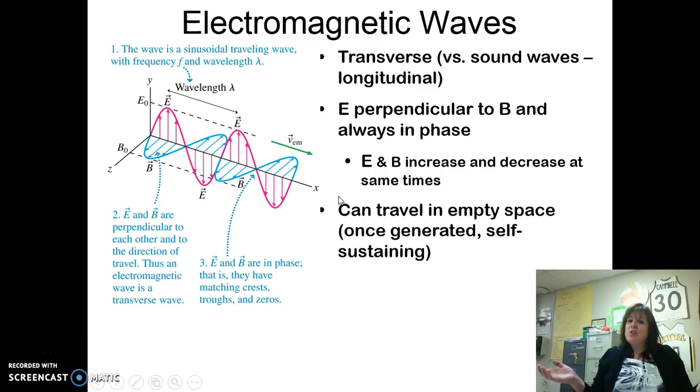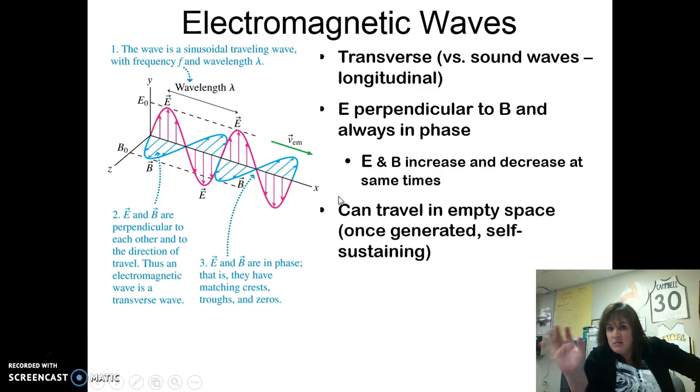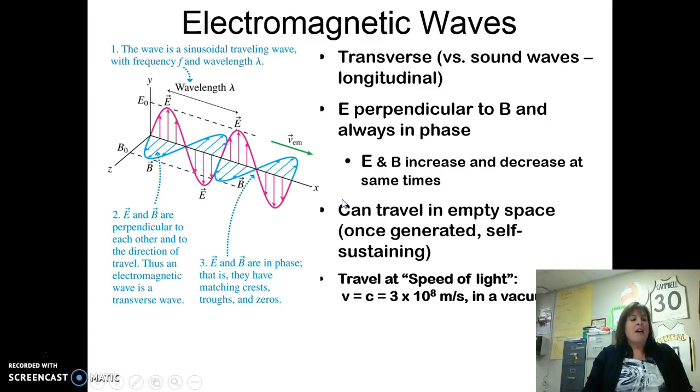Now, because these are oscillating electric and magnetic fields, I don't need a medium. Wait, light doesn't need a medium either, does it? Whereas like sound, sound needs a medium because it's got to vibrate particles. But these are just oscillating electric and magnetic fields. So they don't need anything to travel. They can travel in a vacuum. Once we create them, they just keep going. Another thing Maxwell discovered is that they travel at the speed of light. Speed of light is three times ten to the eighth meters per second. Write that down because you're going to need it. And that's in a vacuum.